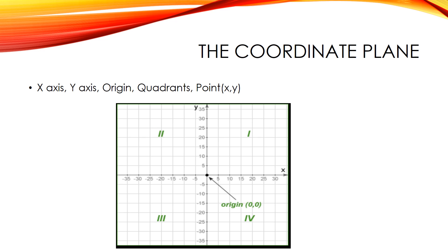The point where the two axes cross is called the origin. When the origin is in the center of the plane, they divide it into four areas called quadrants. The first quadrant by convention is the top right and then they go around counter-clockwise.